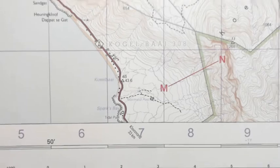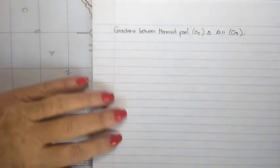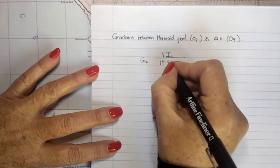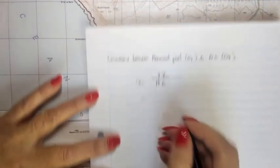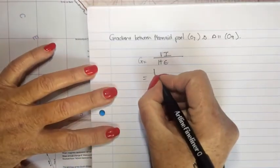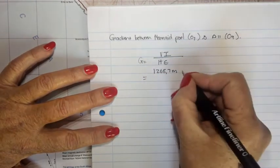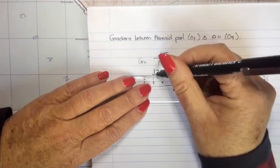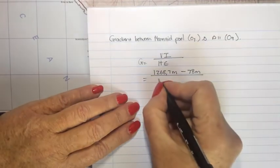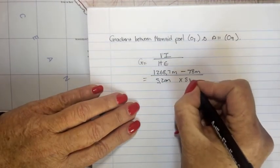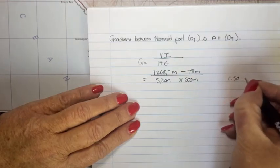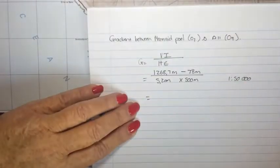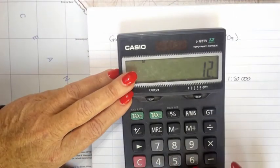To calculate the gradient between the Mermaid Pool and Trig Beacon 11: gradient equals vertical interval over horizontal equivalent. The Trig Beacon height is 1268.7 meters, minus the estimated height of the Mermaid Pool of 78 meters above sea level. The horizontal distance is 5.2 centimeters multiplied by 500 meters, because it's a 1:50,000 scale map and we need the same units.